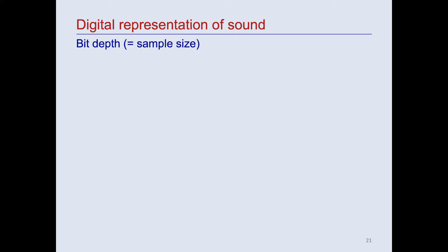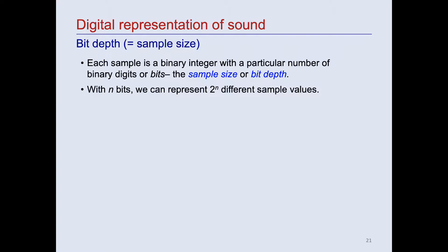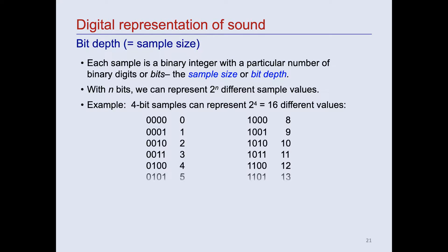In addition to sample rate, the other parameter that characterizes a digital audio recording is its bit depth, or sample size. What does this mean? Each sample is a binary integer with a particular number of binary digits, or bits. The number of bits used for each sample is what we mean by bit depth. The bit depth determines the number of discrete amplitude values that can be represented by a sample. Specifically, with n bits, we can represent 2 to the n different sample values. So, for example, 4-bit samples can represent 2 to the 4th power, or 16 different values. All of the individual sample values are shown here in both their binary and decimal representations. This is just a made-up example for purposes of illustration. In fact, we would never record audio with only 4-bit samples, as this would result in an extremely low-quality, noisy recording. We'll have more to say about that shortly.